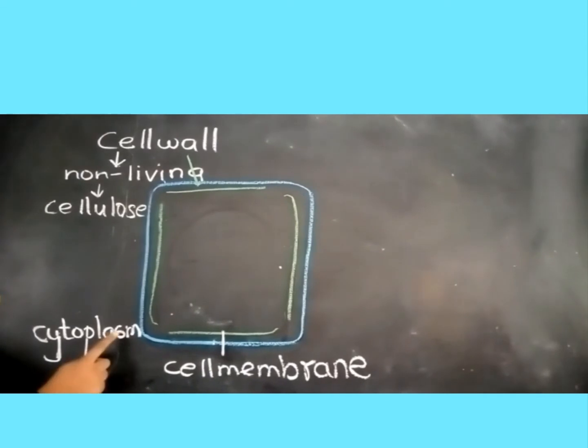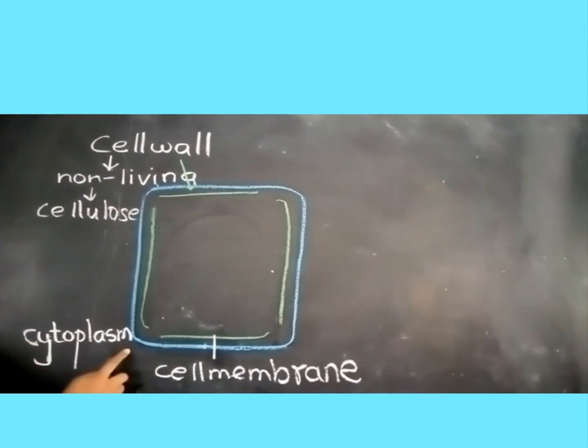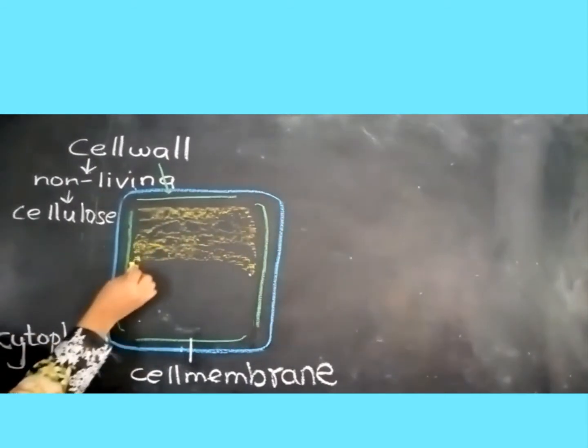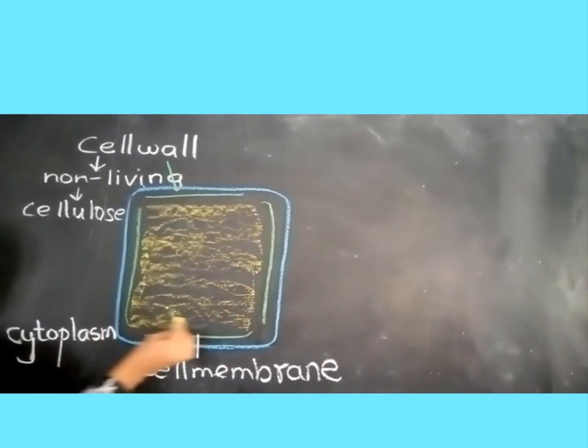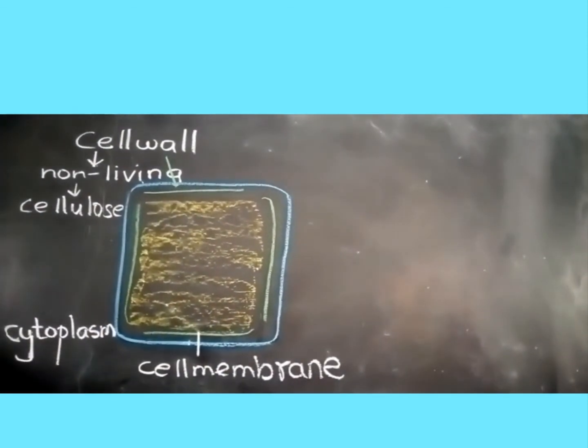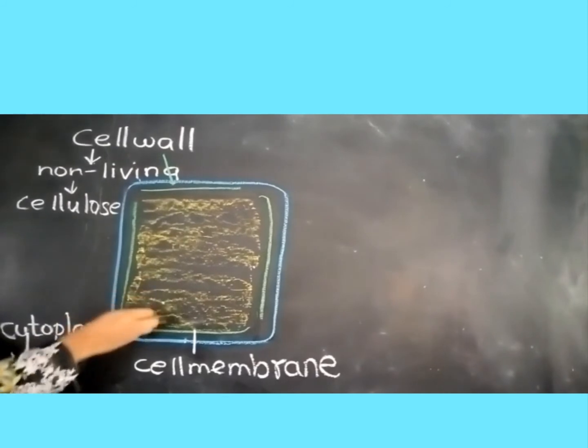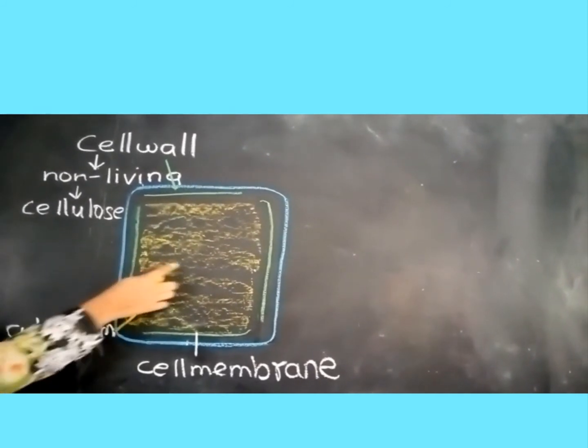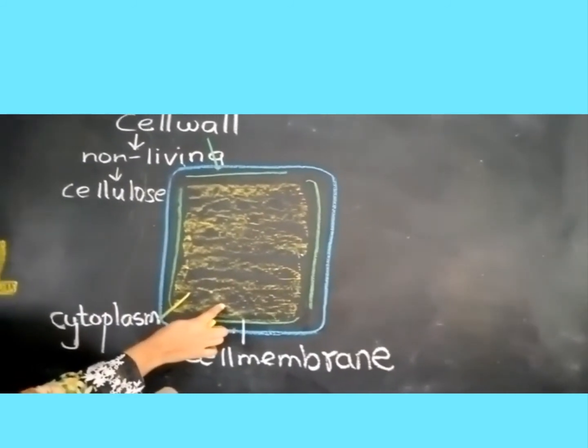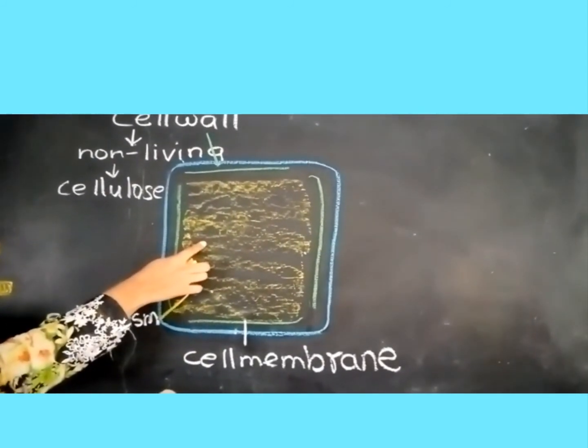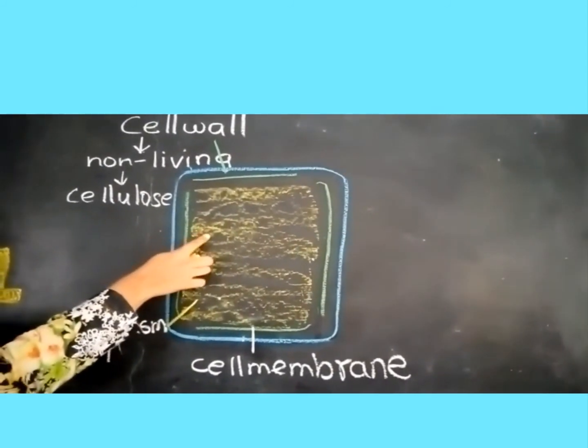Now we will discuss the cytoplasm. The cytoplasm is a jelly-like fluid which fills the interior part of both the plant and the animal cell. The cytoplasm acts like a laboratory for the cell since all the chemical reactions take place inside the cytoplasm. The cytoplasm contains all the living and non-living minute structures of the cell.